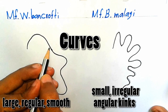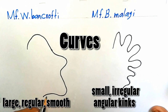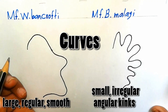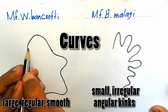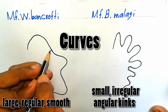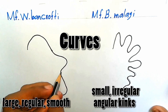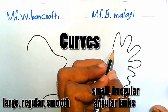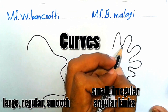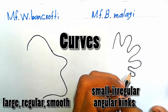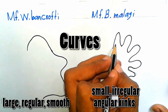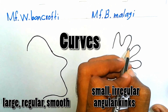For Wuchereria bancrofti: body curves are large, with a small number of curves, and body curves are regular and smooth. For Brugia malayi: body curves are small and angular, with a large number of curves, and body curves are irregular and angular kinks.